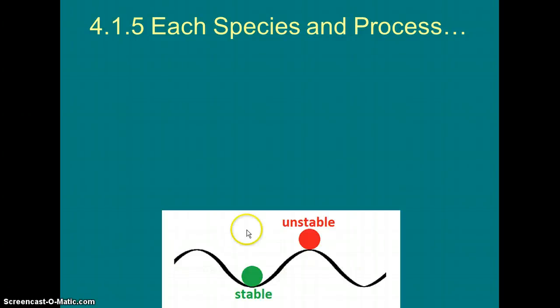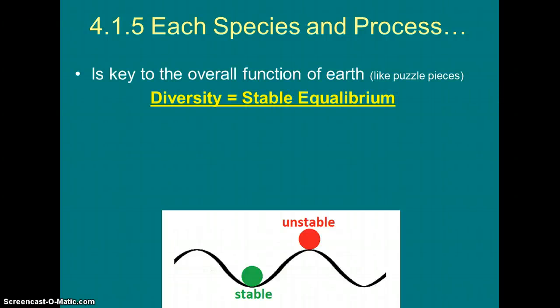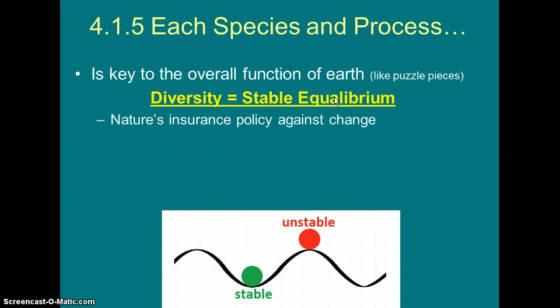Why do we care? These species and their diversity function together like puzzle pieces to make the Earth or the biosphere work. Think about inputs and outputs — they're all interconnected. That diversity makes the whole biosphere a stable equilibrium system. We want that stability because it's nature's insurance policy. If I push this green ball, it moves back and forth — that's steady state equilibrium, a negative feedback loop. That's a good thing.